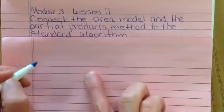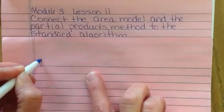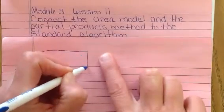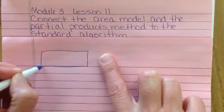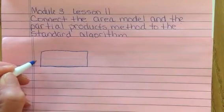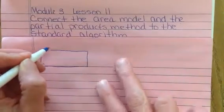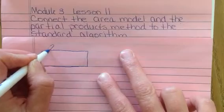So let's start by drawing a rectangle, just like we used when we were using the area model to find area and perimeter. I'm going to give this a length of 8 and a width of 200.